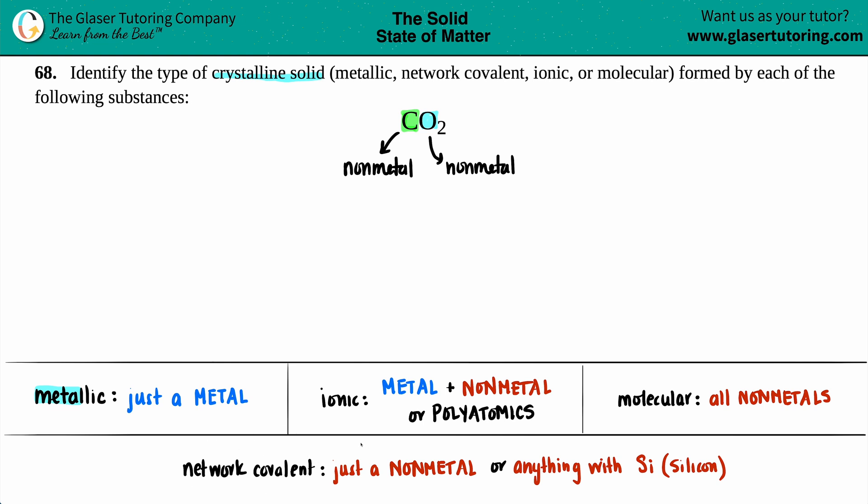A network covalent crystalline solid is when you would see a single non-metal—kind of like the equivalent to metallic where you see a single metal—or anything with silicon being the first element. But here I have two different non-metals, and one of them is not silicon, so it's not network covalent. It forms as a molecular crystalline solid. Let's write that down.